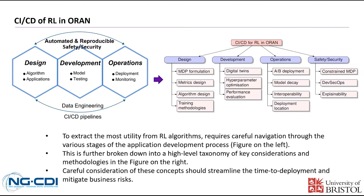We further break down each block into a high-level taxonomy of considerations and methodologies shown in the right figure. From the design of the RL model, the MDP — Markov decision process — formulation, matrix design like agent, state, action, and reward, algorithm design, and training methodologies like online or offline training, directly determine the success or failure of the models. For model development, we focus on the design of the digital twins, hyperparameter optimization, and the scheme for performance evaluation. In this stage, the related training skills of the model heavily affect model performance. For the operations, the edge deployment, backup scheme for model decay, and interoperability should be considered.